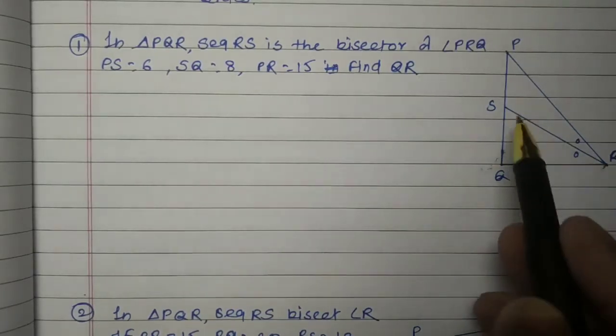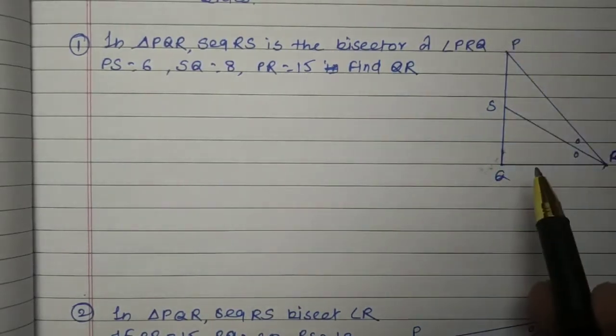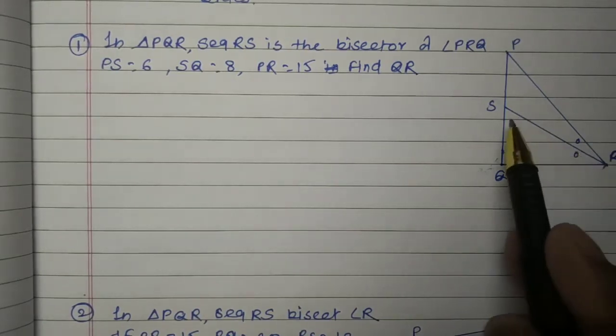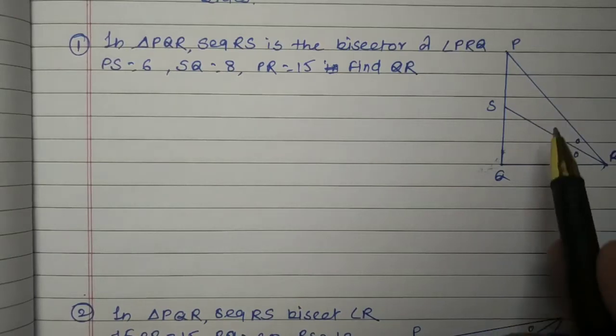In this figure, RS is the bisector of angle PRQ. What is the angle bisector property? The angle bisector of a triangle divides the side opposite to the angle in the ratio of the remaining sides.